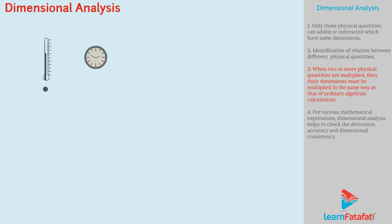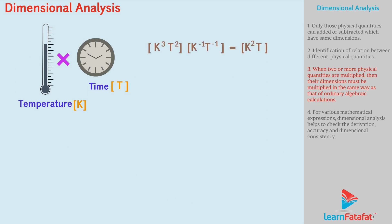Third, when two or more physical quantities are multiplied, then their dimensions must be multiplied in the same way as that of ordinary algebraic calculations. For example, pressure equals to force upon area.